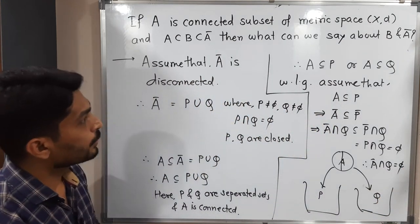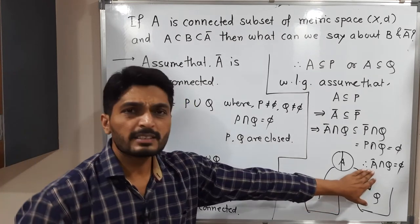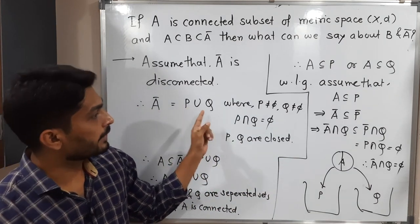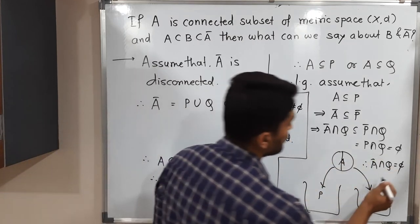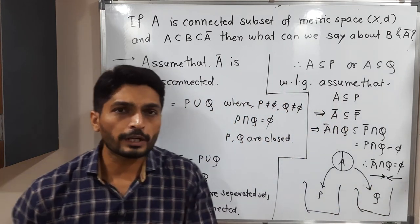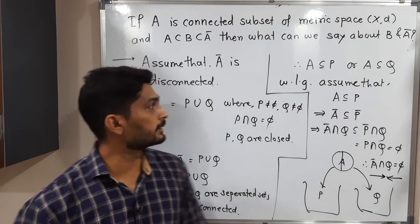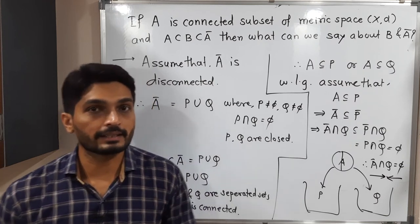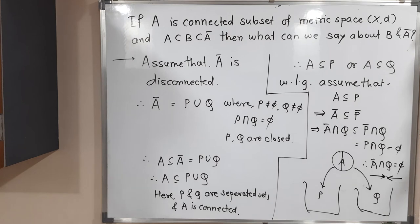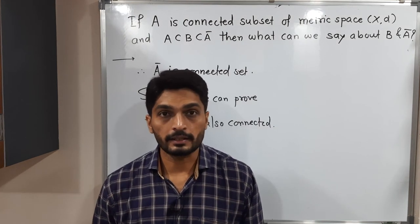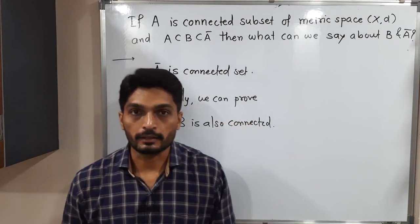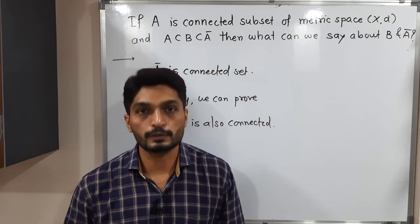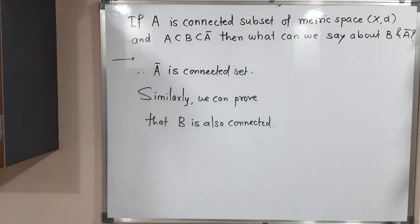But this is a contradiction, because Ā = P ∪ Q and Q is non-empty, so Ā ∩ Q cannot be empty. Therefore our assumption that Ā is disconnected is wrong, and we conclude that Ā is connected. In the same way, we can prove that B is also a connected set — this second part is left as an exercise.